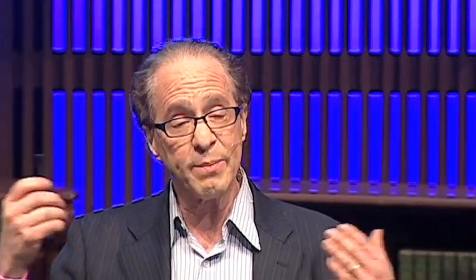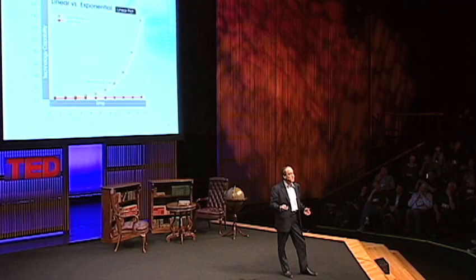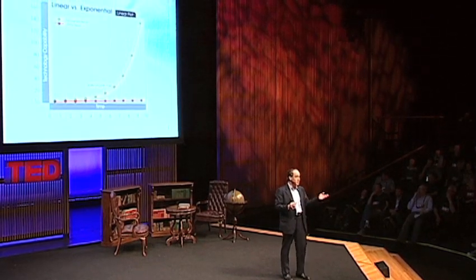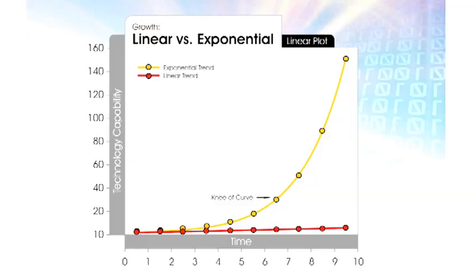It's hard-wired in our brains. But the pace of exponential growth is really what describes information technologies, and it's not just computation. There's a big difference between linear and exponential growth. If I take 30 steps linearly — 1, 2, 3, 4, 5 — I get to 30.